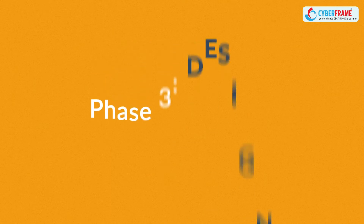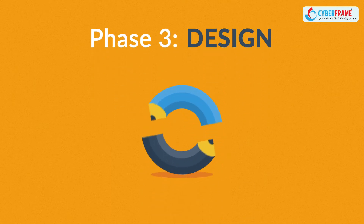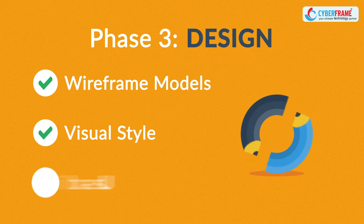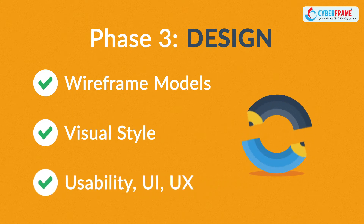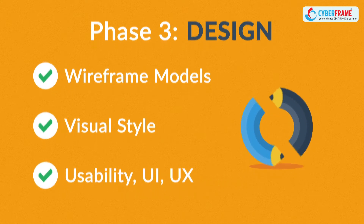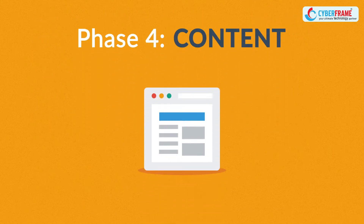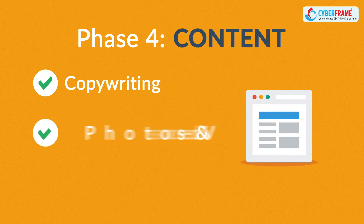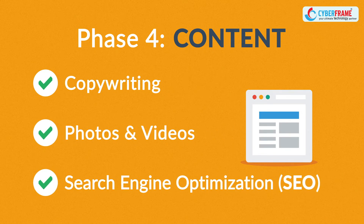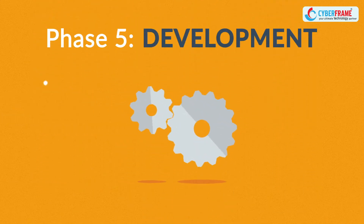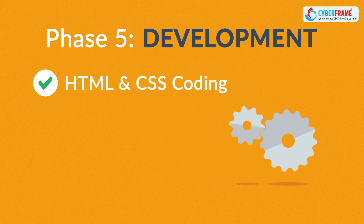Phase three: Design. Not only do we focus on wireframe models and the visual style in this stage, but also on the usability of the user interface for the best possible user experience. Phase four: Content. A very important part of the process is choosing the right text, photos, or videos — all optimized not only for your visitors but also for search engines.